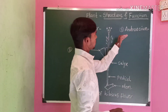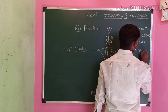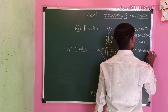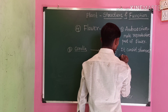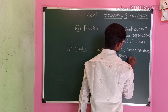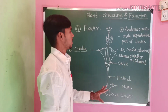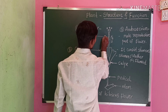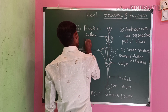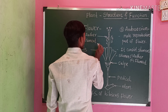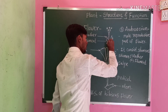Androecium is the male reproductive part of the flower. It consists of stamens. Stamens are made up of anther and filament. This part is called the anther, and this part is called the filament.